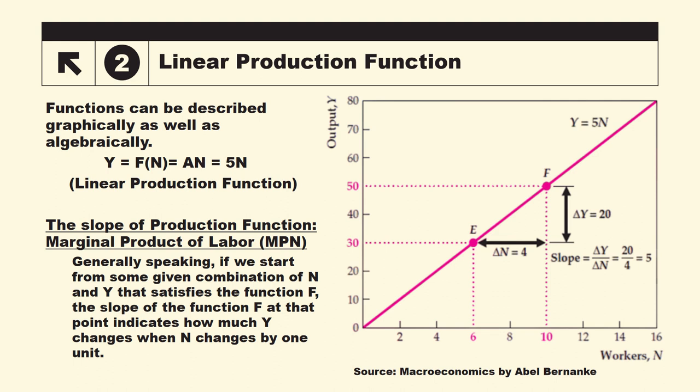So yeh jho straight line red aapko nazaraa rahae hain, so yeh is production function ko describe kar rahae hain that y is equal to 5n. So if you look at this starting point, yeh kiya bata rahae hain that when number of workers is 0 output is also 0. So jab aap this production function meh n ki value put karayenge, so that y ki value deegi. If n ki value 0 put karayenge, toh 5 into 0 is equal to 0. So output is 0.